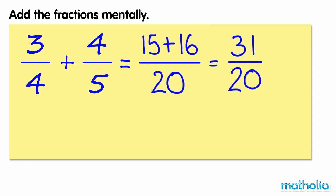31 twentieths is an improper fraction. We can rewrite this as the mixed number 1 and 11 twentieths.